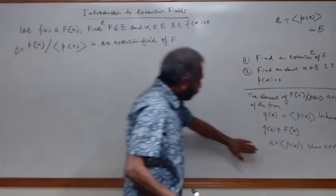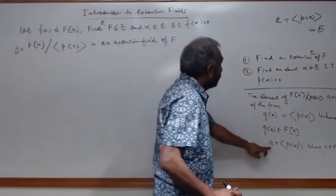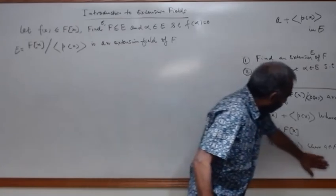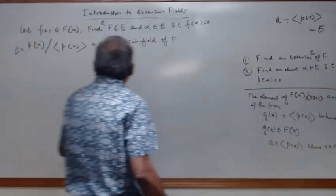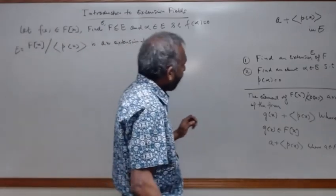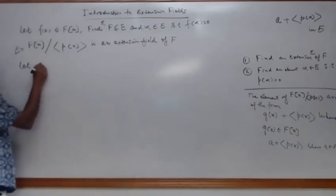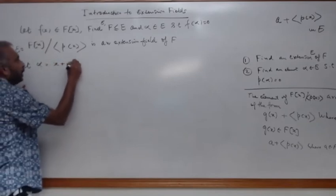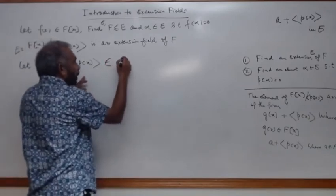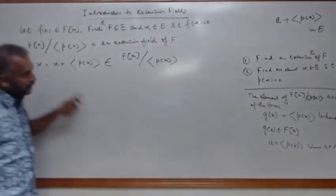Now we need to find another type of element — one that could be a zero of p(x). That element is alpha equals x plus ⟨p(x)⟩, which is definitely an element of F[x]/⟨p(x)⟩. Since p(x) is an irreducible polynomial in F[x], we can write p(x) equals a₀ plus a₁x plus a₂x² plus ... plus aₙxⁿ.